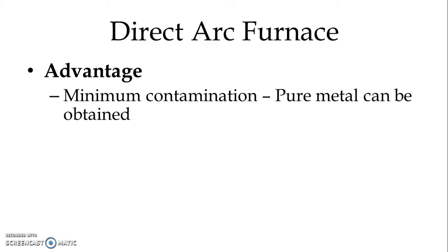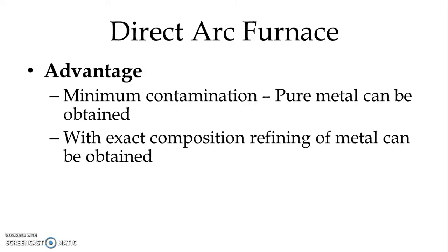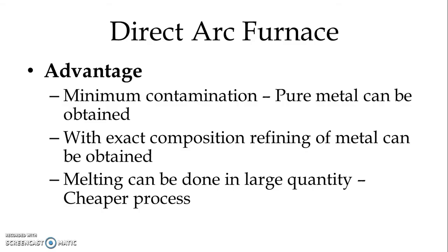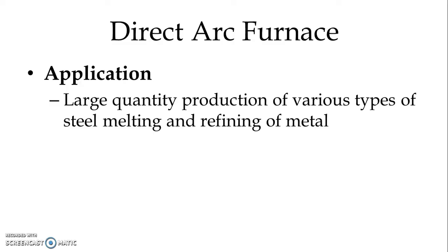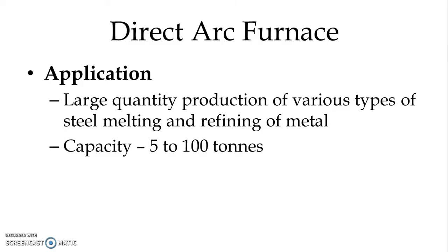High temperature is possible. Contamination is very minimum because the process is in a closed environment and oxidation is not possible, so pure metal can be obtained. With exact composition, refining of metal can be obtained. Melting can be done in large quantity and that is why the process always remains cheaper. Application of Direct Arc Furnace: because the process is cheaper and very high temperature is achieved, the application is large quantity production of various types of steel — melting and refining of metal is possible. Capacity: 5 to 100 tons.